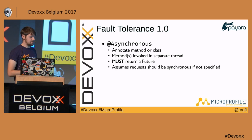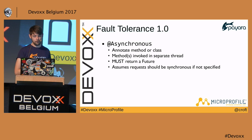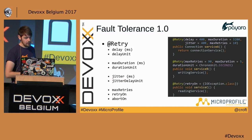The first annotation is @Asynchronous — the simplest one. It runs that method, or every method in a class, in a separate thread. If you use it, you must return a Future; otherwise an exception will be thrown. If you don't annotate with @Asynchronous, all those methods are treated synchronously.